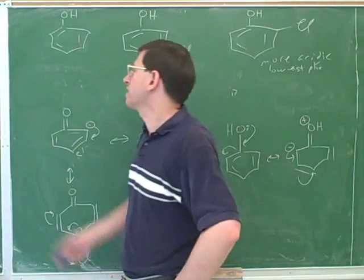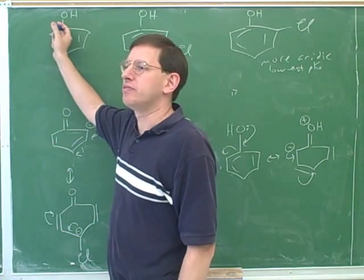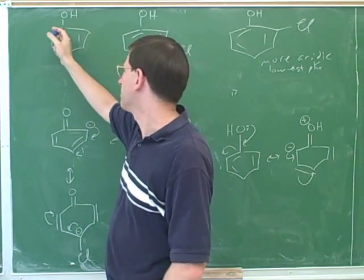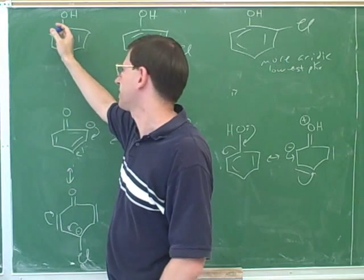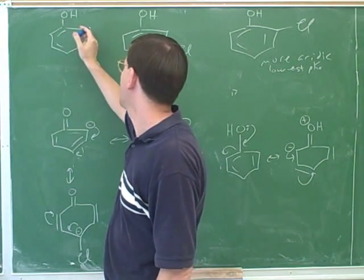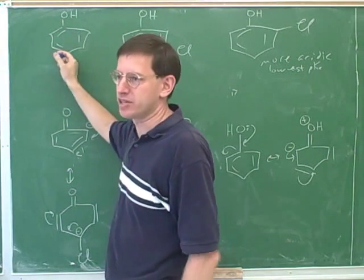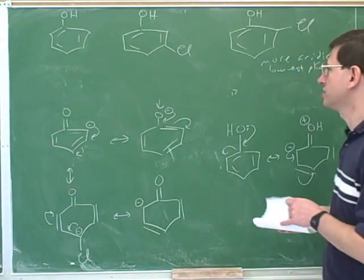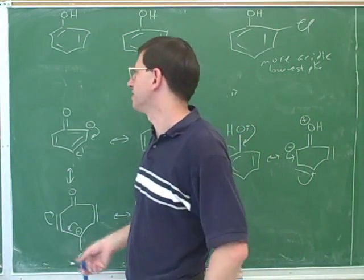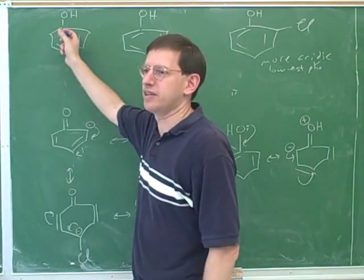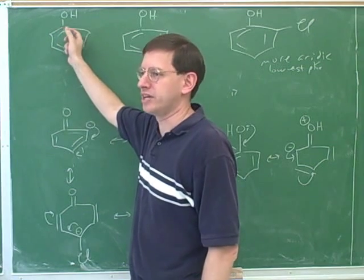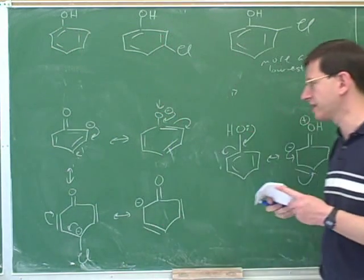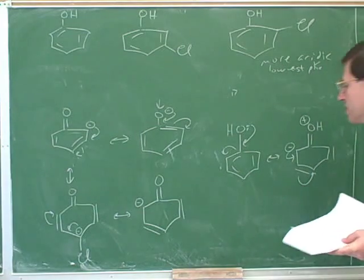If we had started with phenol and wanted to add a chlorine, doing electrophilic aromatic substitution, the chlorine would tend to add at the O and P positions. So if for some reason you were not satisfied that this was acidic enough and you wanted to make it more acidic, you could add a chlorine at the O or P positions very easily using electrophilic aromatic substitution.